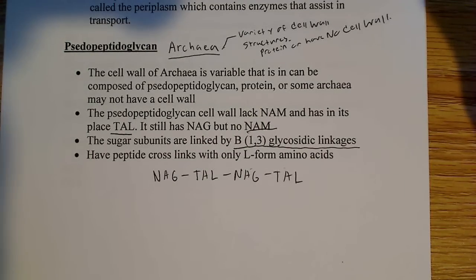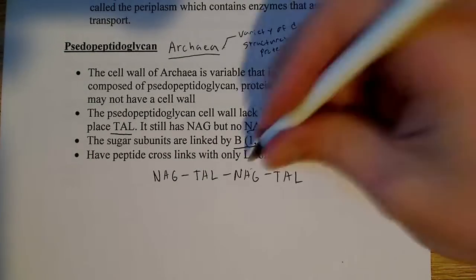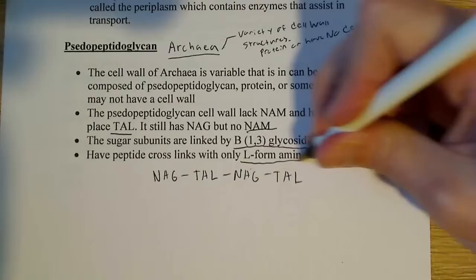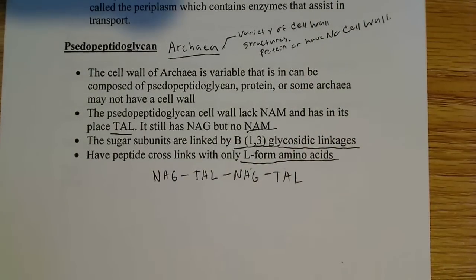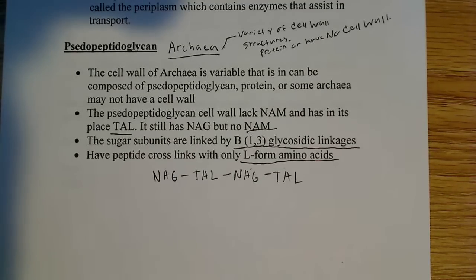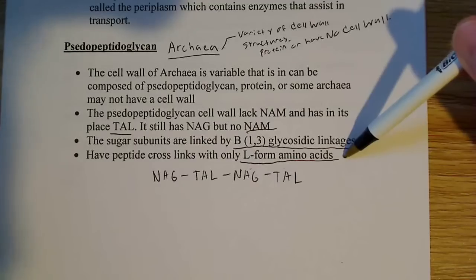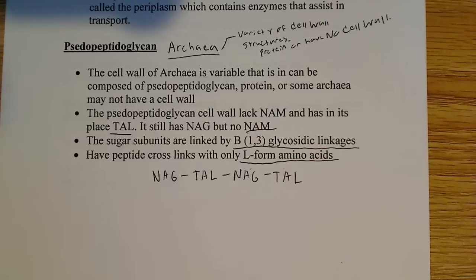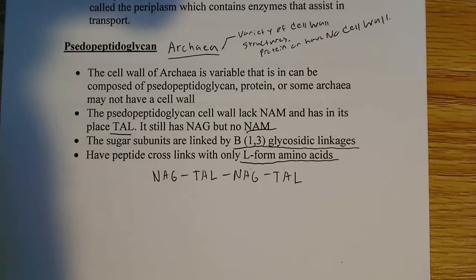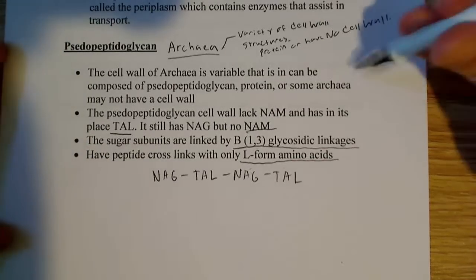Pseudopeptidoglycan also has peptide crosslinks, but with only the L-form of amino acids. Remember, peptidoglycan had both L and D amino acids in its peptide crosslinks, so this is another important distinction: the peptide crosslinks in archaebacteria only have L-form amino acids.